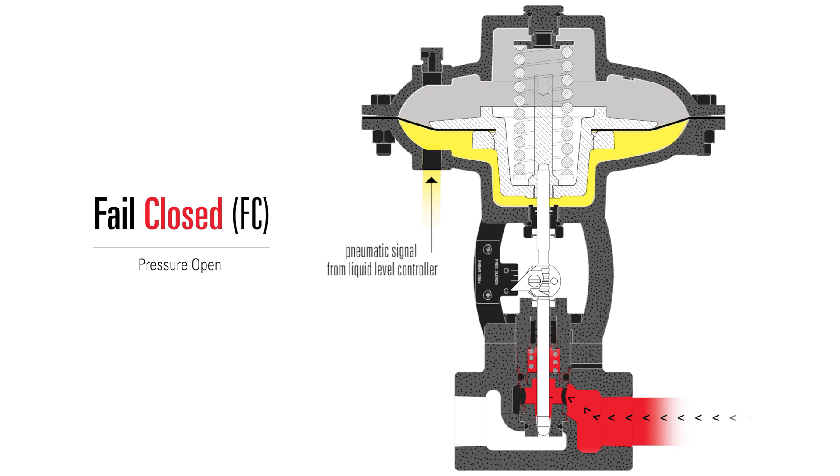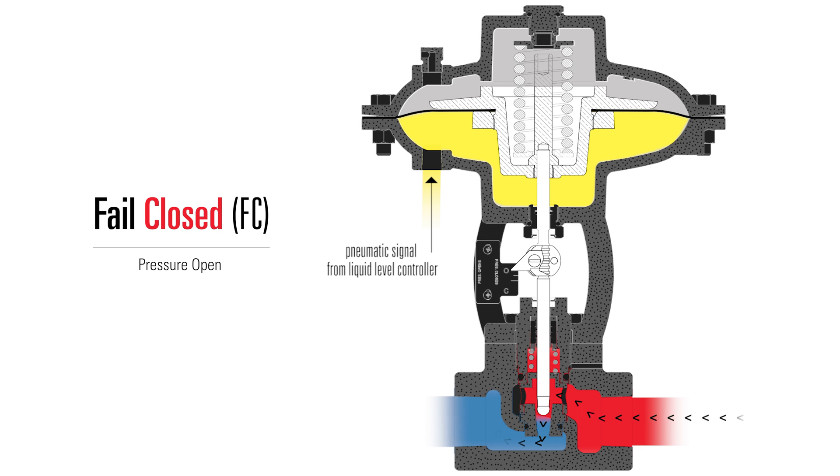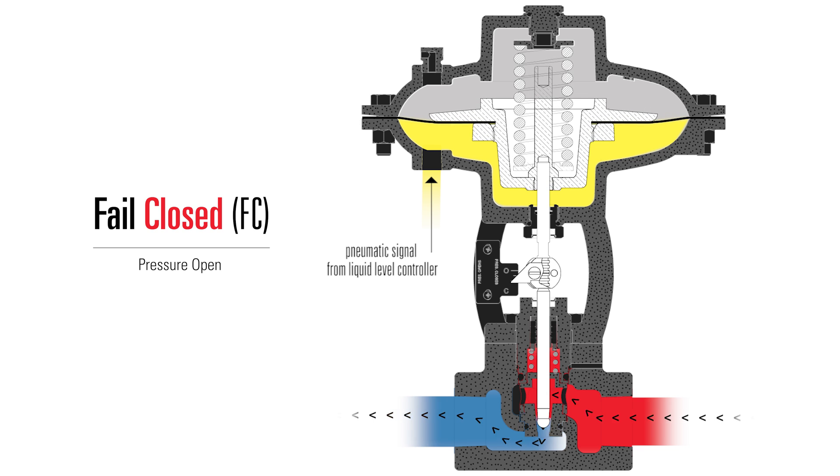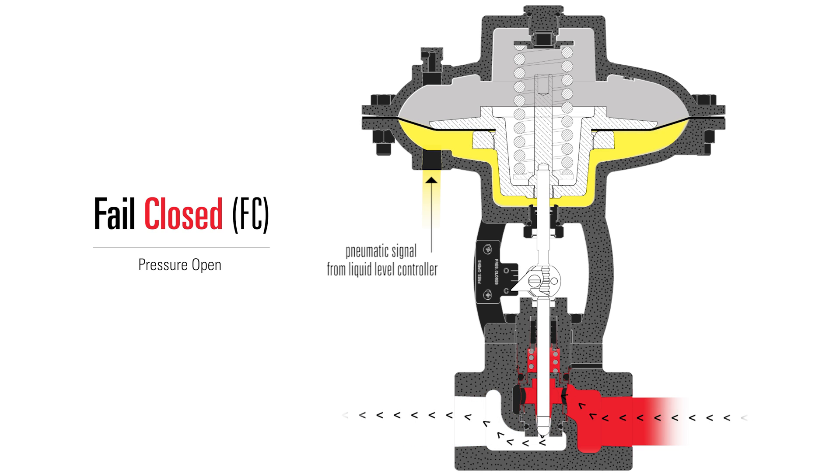Fail closed, or pressure open, means that when the signal is lost, the valve will close. If you're using your valve in a pressure reducing application, such as for suction control on a gas compressor, you want it to be fail closed.